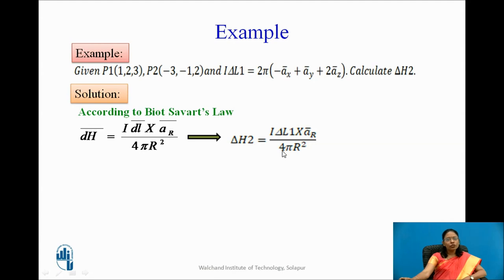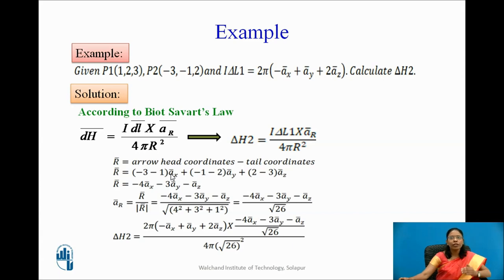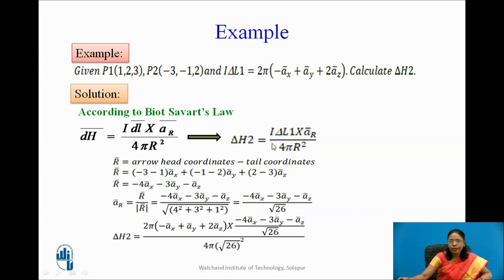Substituting the known values: I delta L1 is known; the only unknowns are R and AR. R bar equals arrow-head coordinates minus tail coordinates, so R bar uses P2 minus P1: (−3 − 1) AX + (1 − 2) AY + (2 − 3) AZ, giving R bar = −4AX − AY − AZ. The unit vector AR bar equals R bar divided by its magnitude.